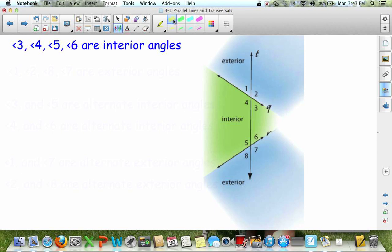Okay, angles 3, 4, 5, and 6 are interior angles. So 3, 4, 5, and 6 are all interior because they are on the inside of the two coplanar lines. They're on that interior space.